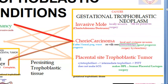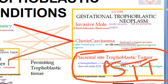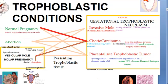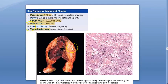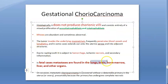Placental site trophoblastic tumor (PSTT) is another cancerous placental condition. Unlike other trophoblastic tumors, PSTT does not make HCG — it makes human placental lactogen (hPL). Surgery is needed. Risk factors for carcinomatous change include age over 40 or under 20, serum HCG above 100,000 mIU/mL, very large uterus, or complete molar pregnancy. Malignant features include necrosis, hemorrhage, uterine wall perforation, and metastasis to lungs, brain, and liver.